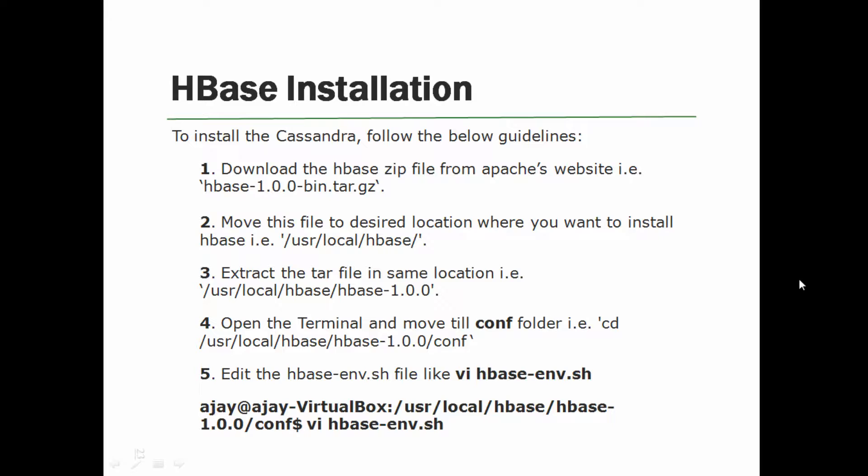First, you need to download your HBase zip file from the Apache website. You can Google 'Download HBase' and download your tar file. Once your zip file is available, you can right-click and extract the file. That extracted file needs to be put where you want to install your HBase database. I have put it inside /usr/local inside the HBase folder.